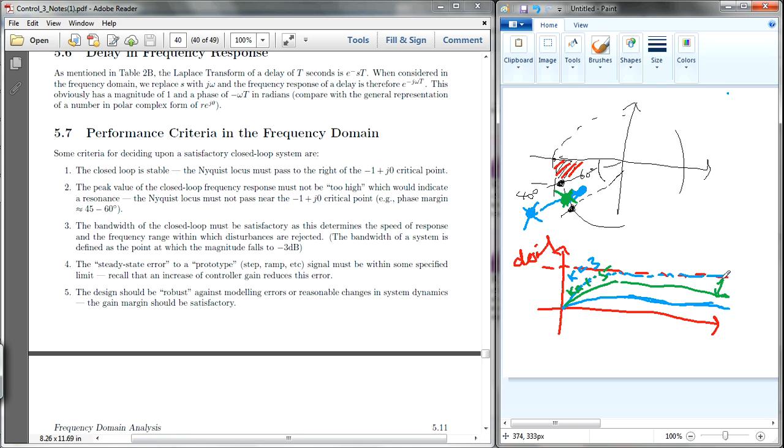And then it has a certain error, but still you minimize the error compared to this. You minimize it from here to here. So this is what it's talking about. And point 5 is just simply saying that it should be robust. In order to be robust, you have to look at the gain margin.